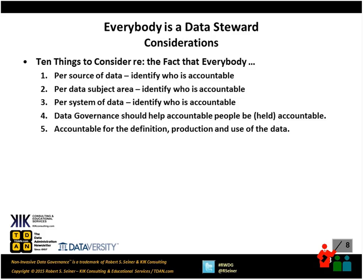Accountable for what? We're talking about accountable for making certain we're not defining the same data for the umpteenth time in our organization. We need to put processes in place when defining new databases so people go out and look to see if the data they need already exists somewhere before creating another version of the same data. People that are producing data — even people on the front line in stores or hotels where data is being entered into systems — need to understand that the way they enter data is going to have some impact on the organization. And the people that use data need to make sure they understand the rules around data protection, security, and privacy.